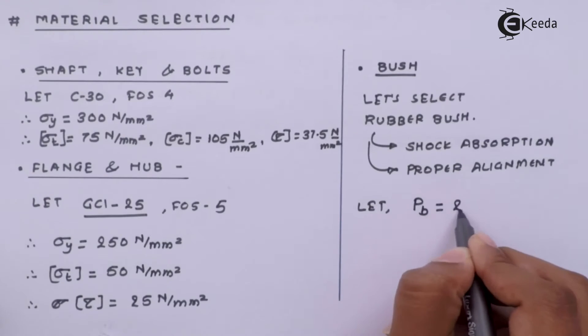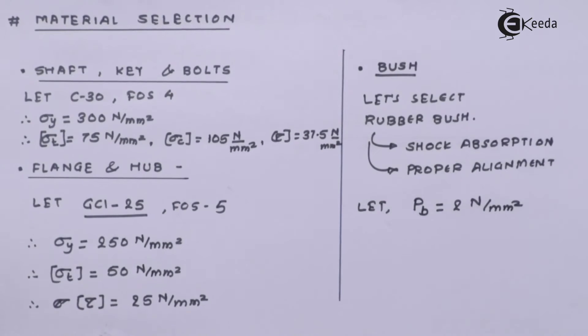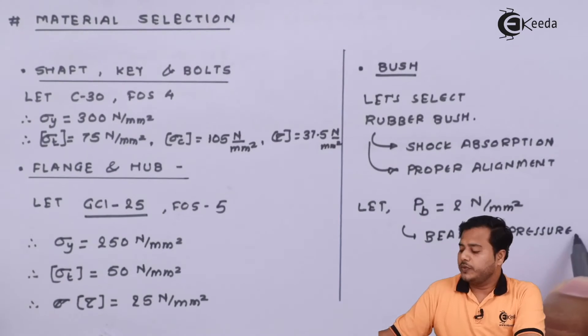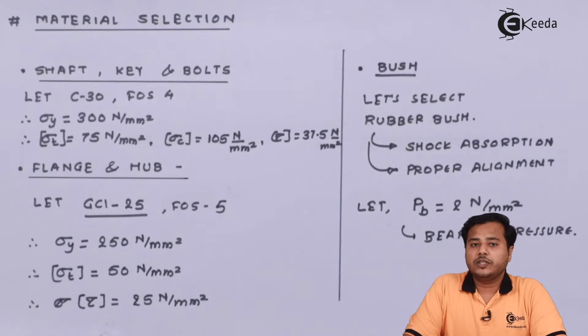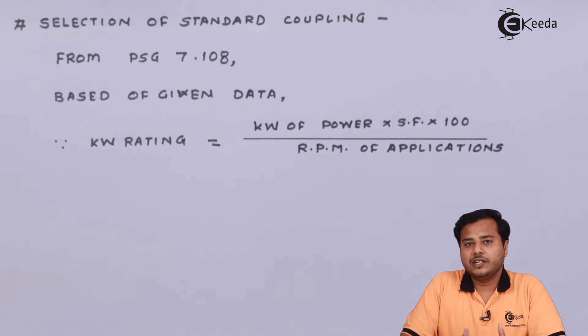So let this one component associated is called bearing pressure, is equal to 2 Newton per millimeter square for this particular kind of metal which is rubber. As we know that the kind of material will be crushed out it will not be sheared up but it will be crushed out because of the plasticity of that material. So we will consider the bearing pressure. So with this material selection let us go for the selection of a standard coupling.